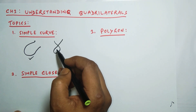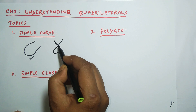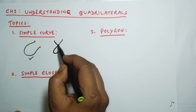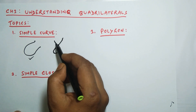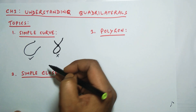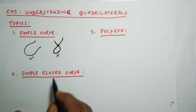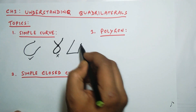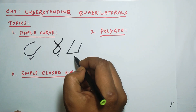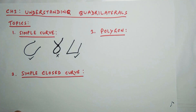Another example: look at this curve. This is the starting point, then the curve goes like this, and at this particular point the curve intersects itself, then this is the end point. So the curve has intersected itself — this is not a simple curve. A simple curve is a curve which does not intersect itself.